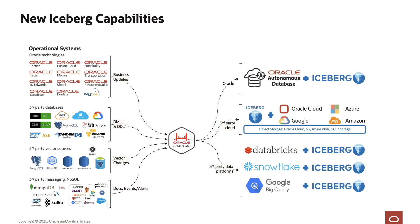With GoldenGate for distributed applications and analytics 23.7, we continue to extend GoldenGate capabilities by adding new supported technologies, and Iceberg open table format ingestion is the newest and latest GoldenGate certified technology. GoldenGate provides the most comprehensive real-time Iceberg ingestions in the market, supporting Iceberg ingestions to various cloud storage services and data platform services. For cloud storage-based Apache Iceberg ingestions, users do not need any engines like Spark, Flink, or any database engines — GoldenGate uses the Iceberg Java API for engine-less Iceberg ingestion.